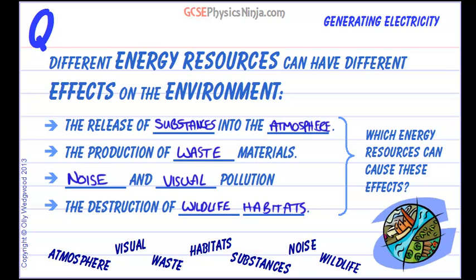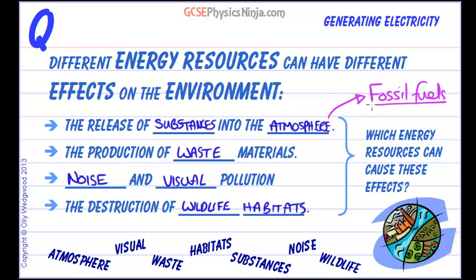Which energy resources can cause these effects? Well, the release of substances into the atmosphere is mainly fossil fuels — that's the culprit. Fossil fuels create carbon dioxide gas, which is a greenhouse gas and can lead to global warming. Also, sulfur dioxide is produced by coal and oil, and that can cause acid rain.